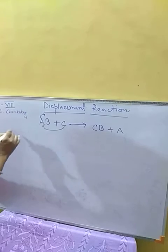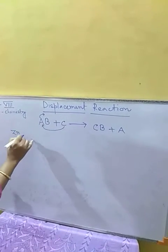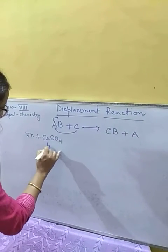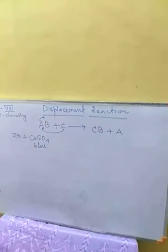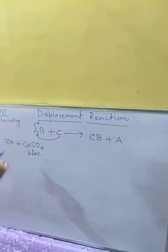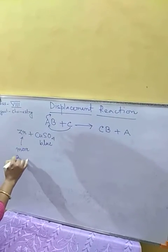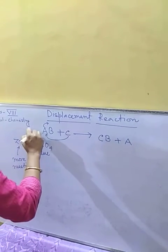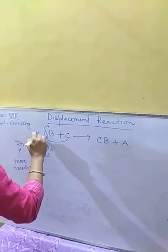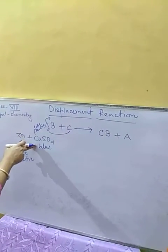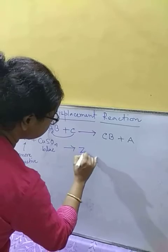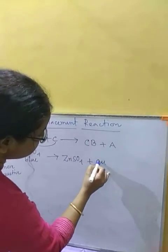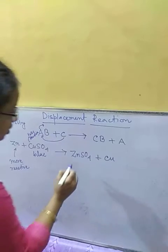Let's look at an example. When zinc reacts with copper sulfate — the color of copper sulfate is blue — since zinc is more reactive than copper, zinc will displace copper and produce zinc sulfate (ZnSO₄) and copper.